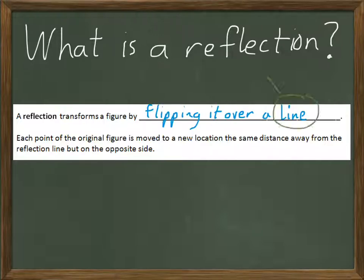This line is called the reflection line or sometimes referred to as the mirror line because that's where the mirror would be if you're reflecting it on the other side. Kind of like you see a copy of yourself on the other side of a mirror if you look in a mirror.